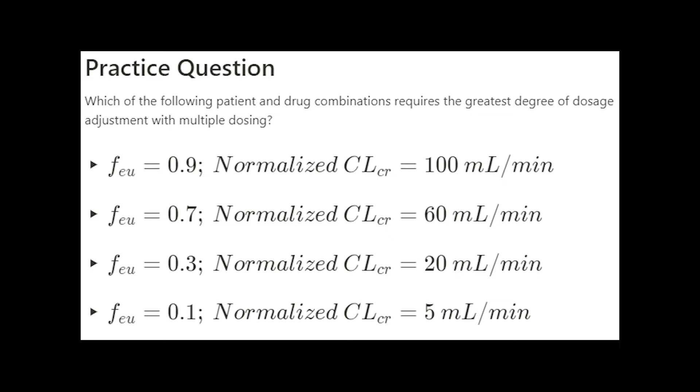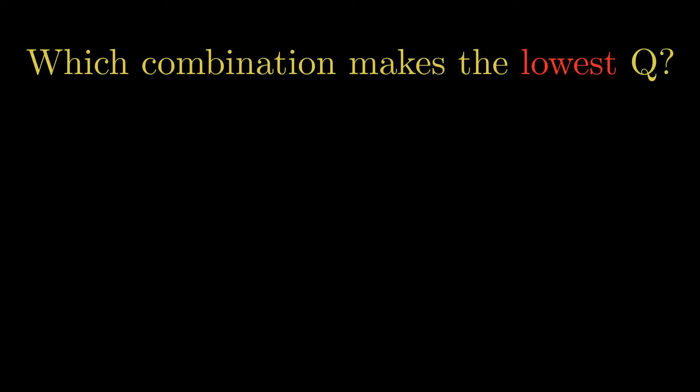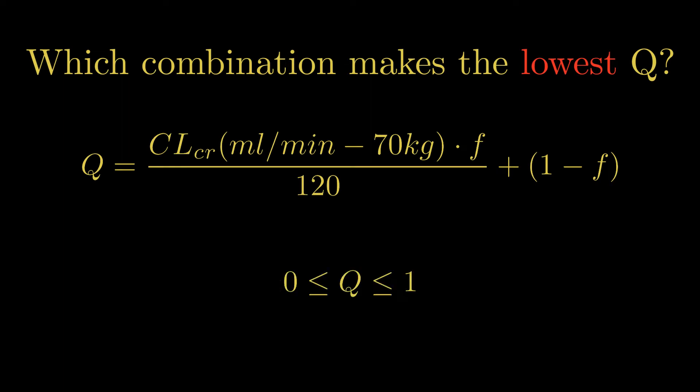So first, let's understand that the greatest degree of dosage adjustment would mean the lowest Q, because Q of 1 is no adjustment, and Q is a fraction between 0 and 1. So we want to find the combination that gives the lowest Q.